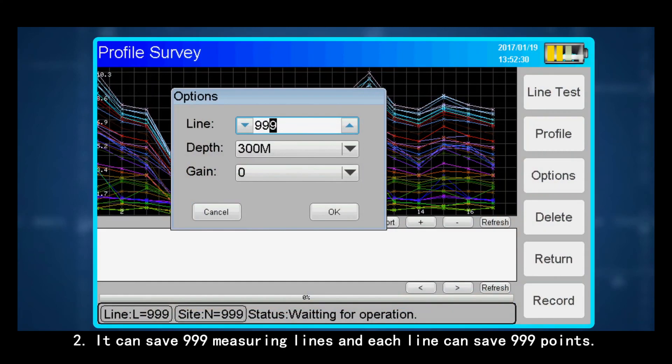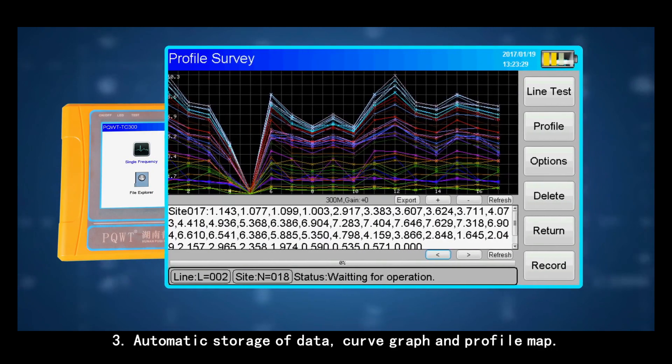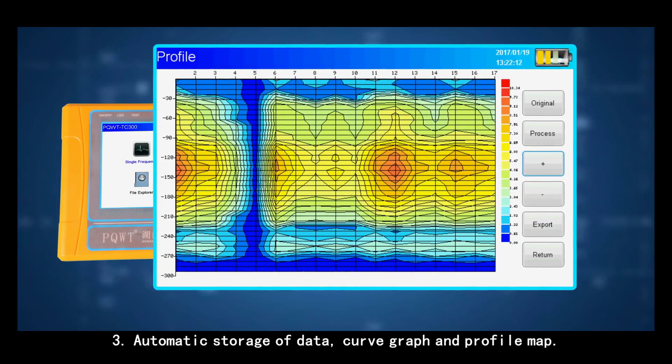It can save 999 measuring lines and each line can save 999 points. Automatic storage of data, curve graph and profile map.